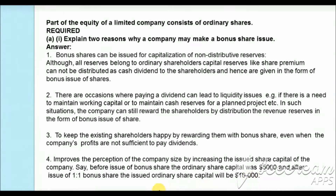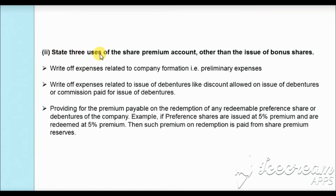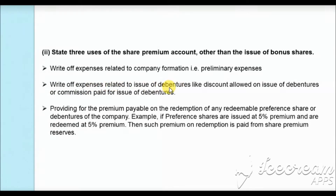Those are four reasons; any two can be stated. In part b, we are asked to state three uses of the share premium account other than issuing bonus shares. The first use is to write off expenses related to company formation, known as preliminary expenses. The second use is to write off expenses related to the issue of debentures, such as discounts allowed or commissions paid on the debenture issue.